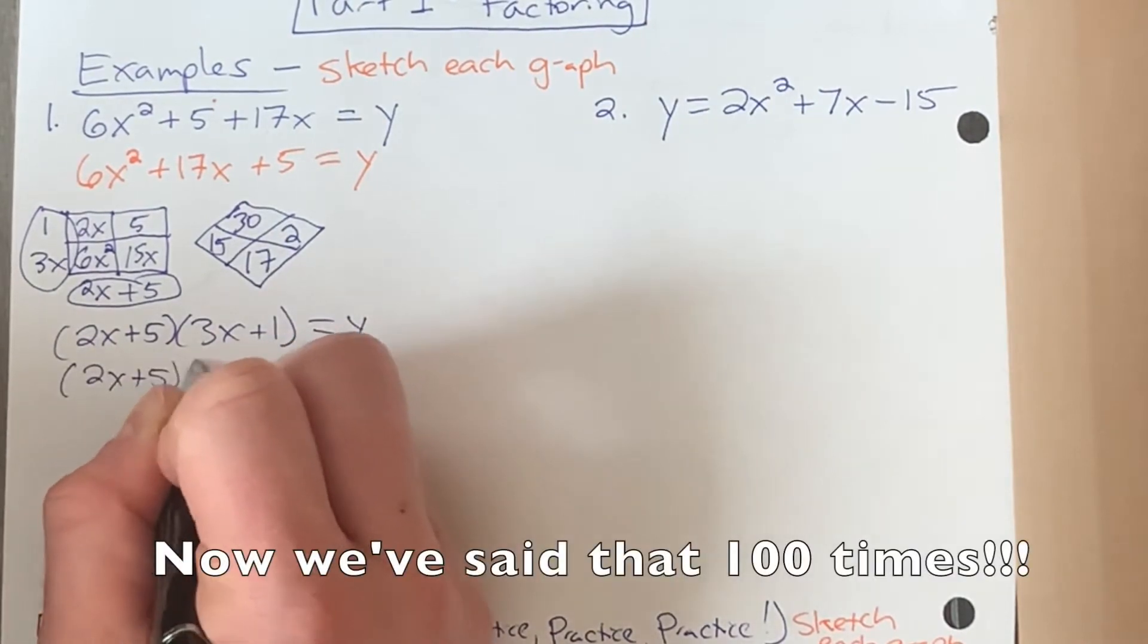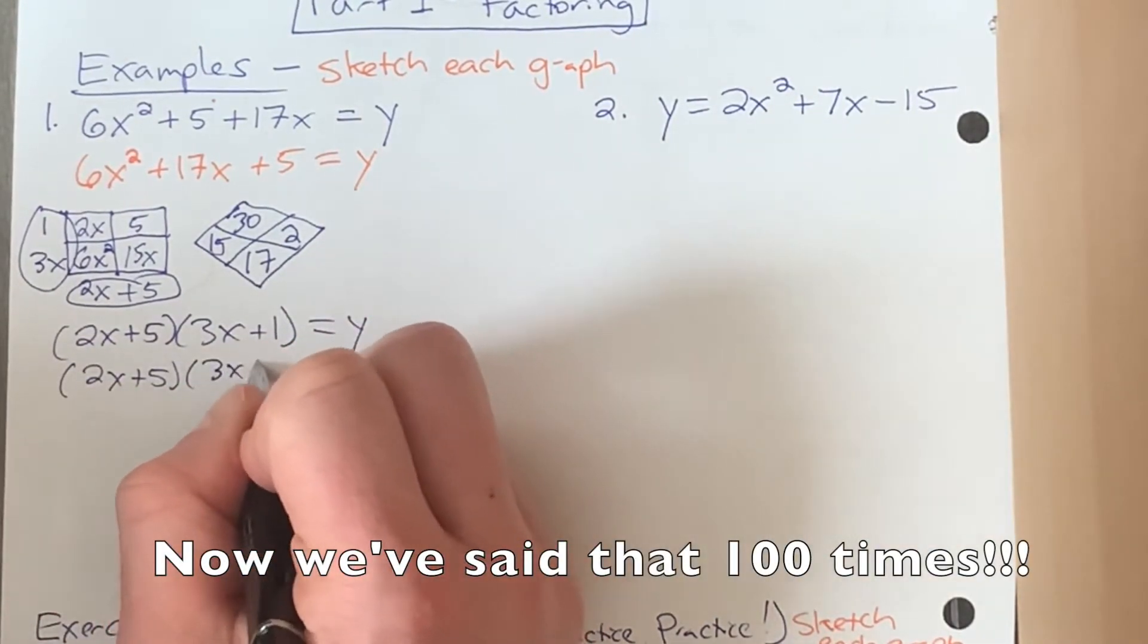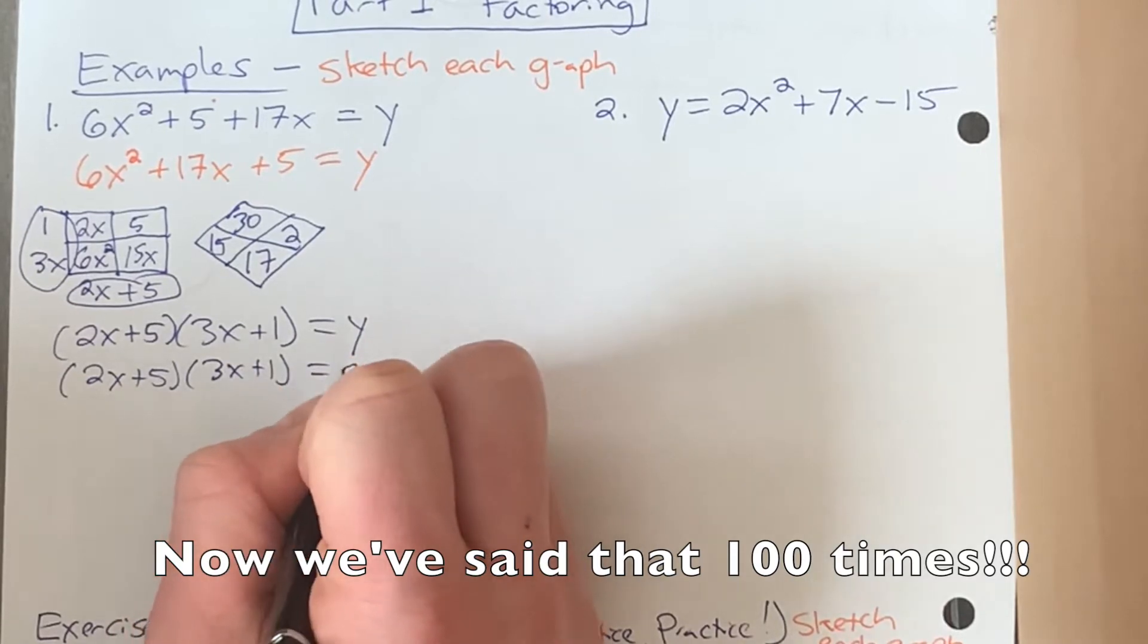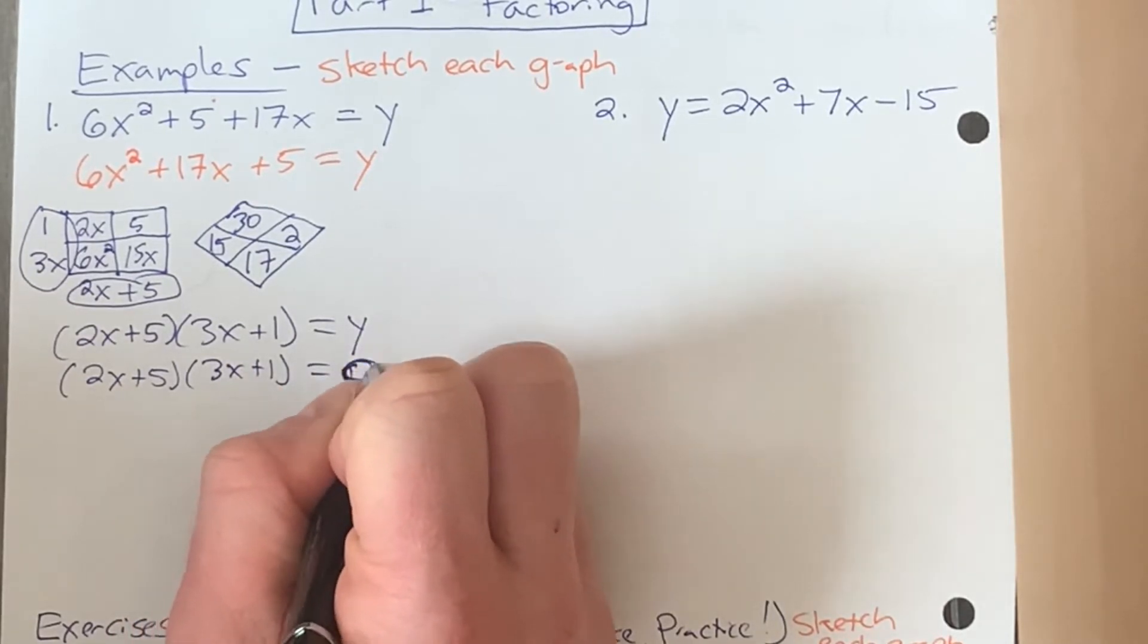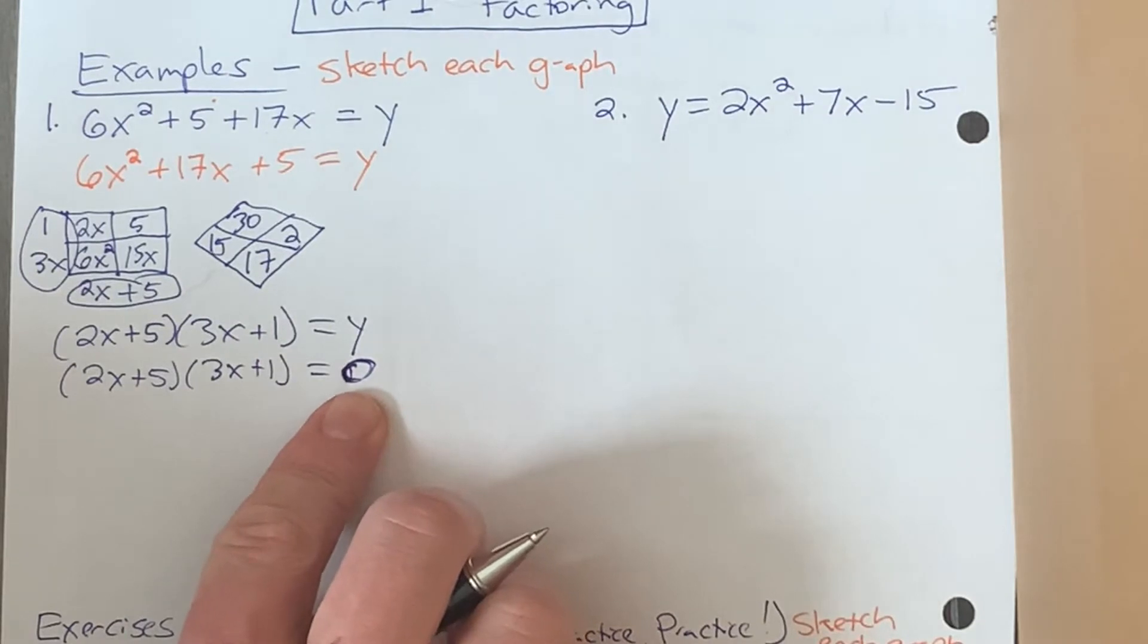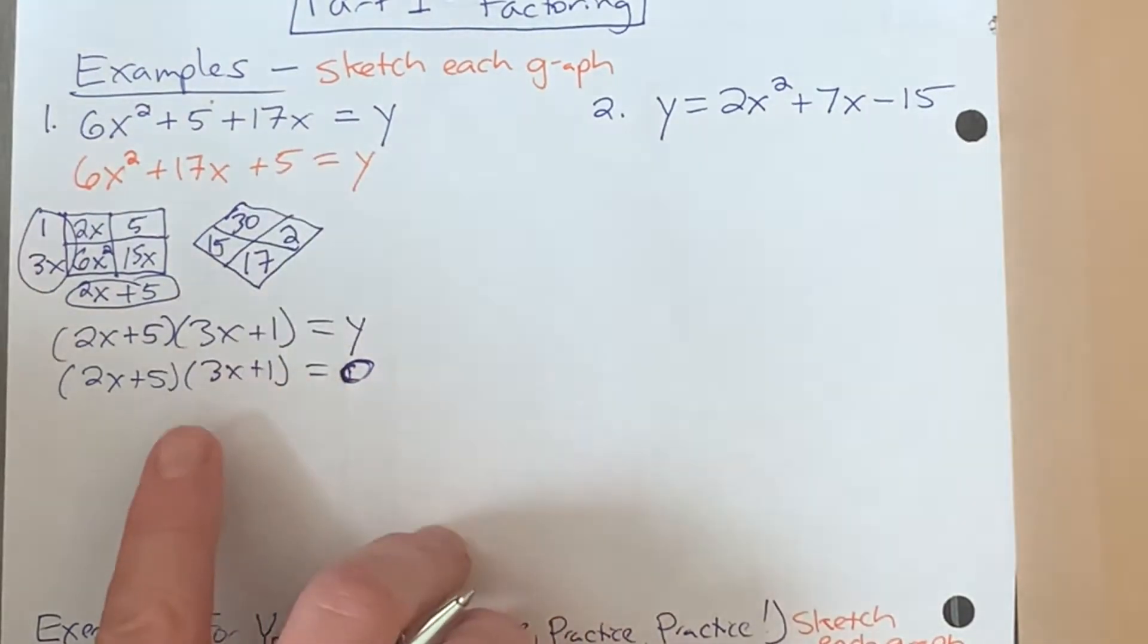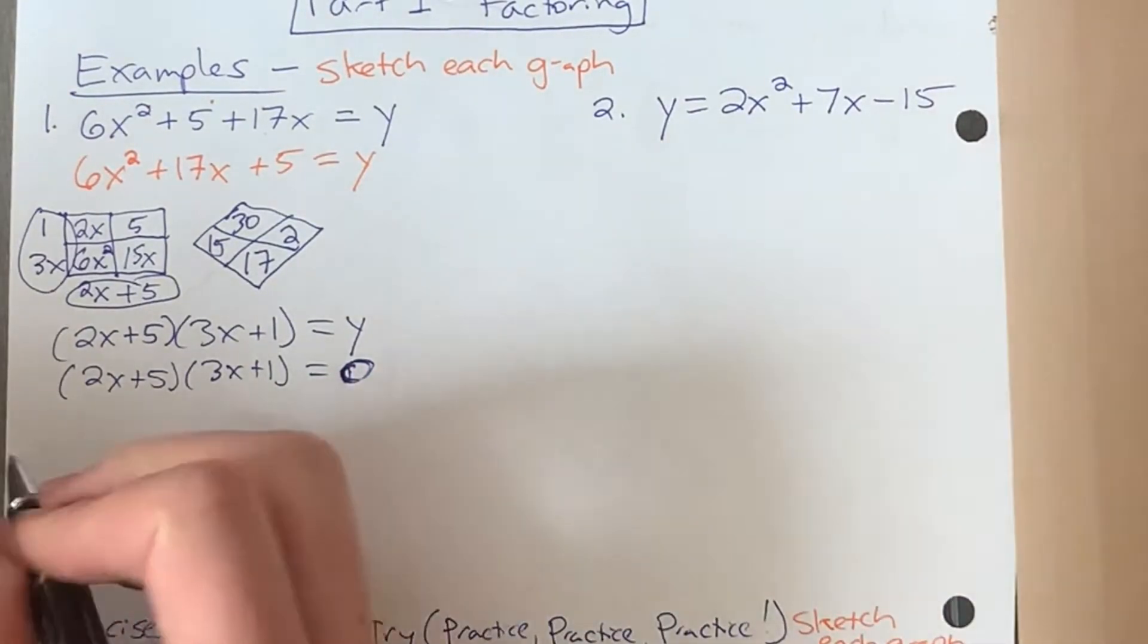I think we just officially passed the 100th time we've said that in class this year. So maybe we don't need to make as big of a deal of that as we have been so far. So now we have this here and we have a couple of factors. We can use this to get the x-intercepts.